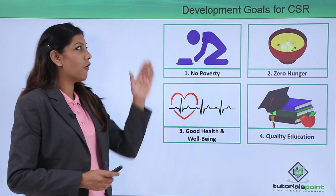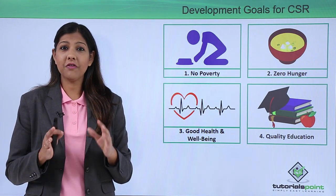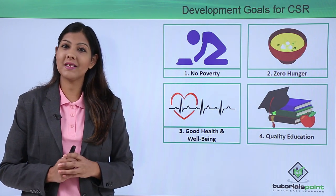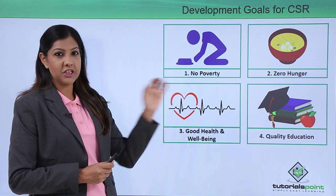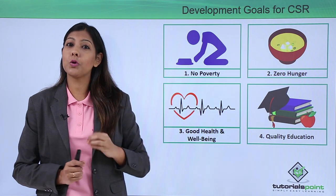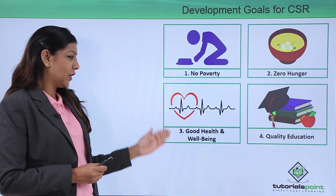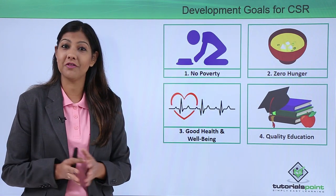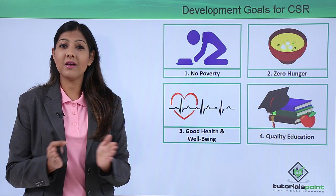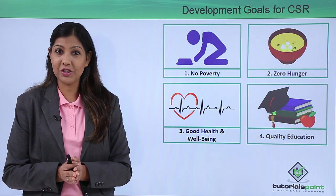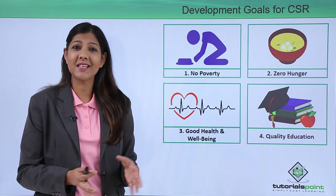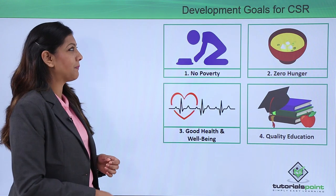Now let's look at the developmental goals for CSR. Different companies and corporates are looking at different goals for why CSR needs to be introduced. First, eradicate poverty — no poverty across India and people living above the poverty line. Second, zero hunger — nobody should go hungry in this country and there should be food for everyone. Third, good health and well-being — being physically fit means being mentally fit. Fourth, quality education — everyone should have access to good quality education, and companies are going out of their way to educate people who cannot afford it.